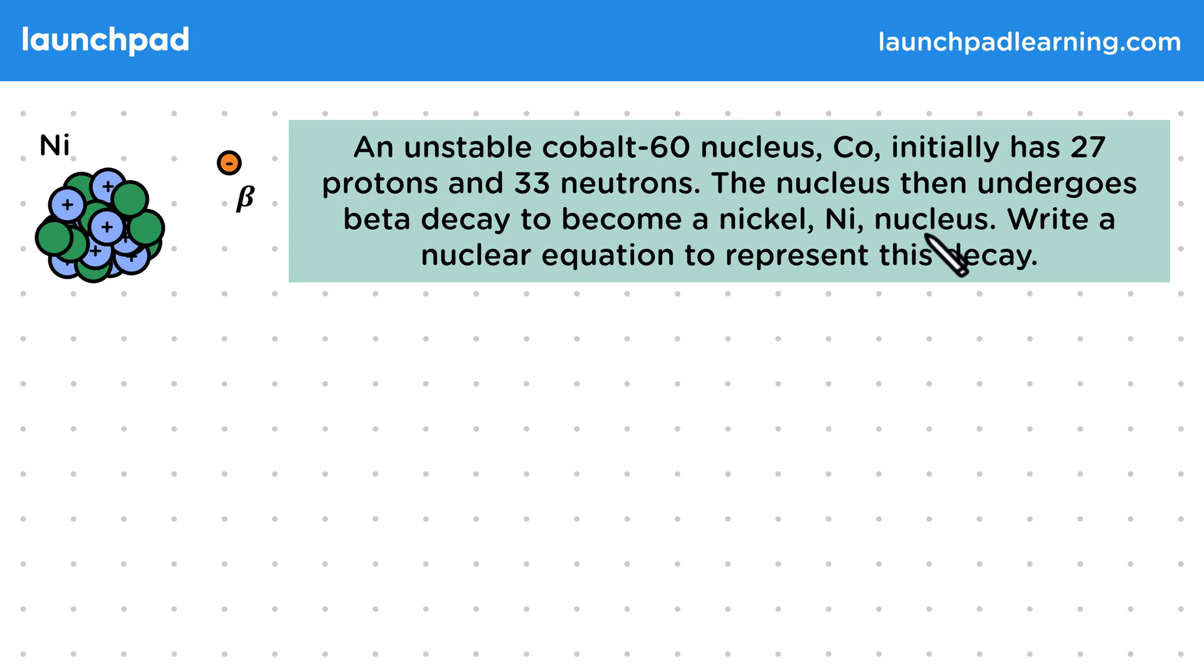The identity of the final nucleus is given to you, as you aren't expected to refer to a periodic table in physics exams, but you should show your working to make sure the atomic and the mass numbers of the nucleus are correct.